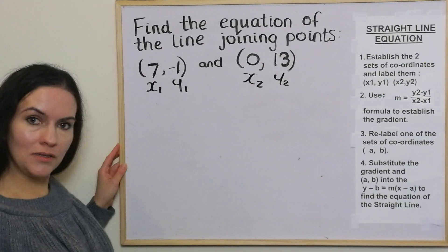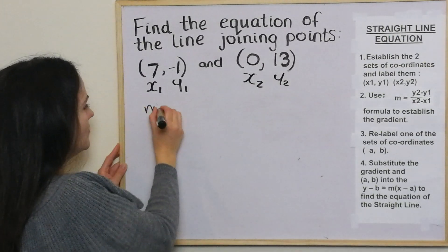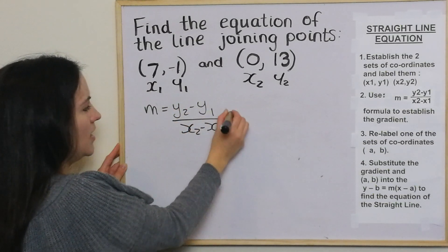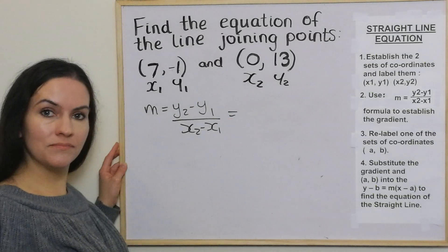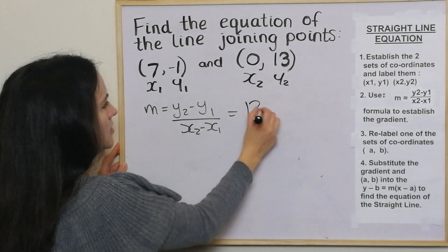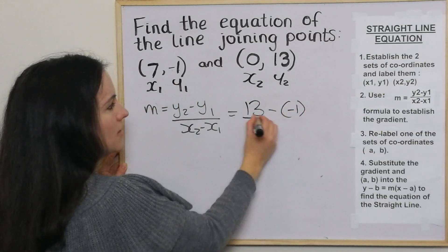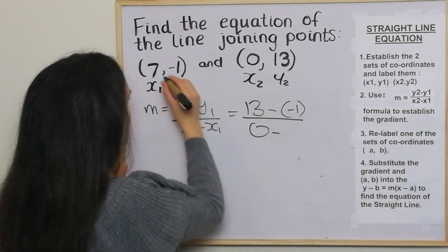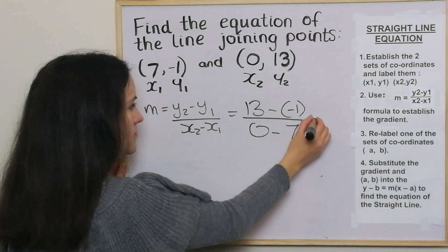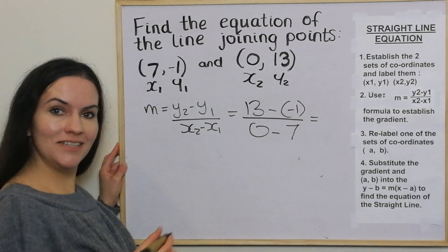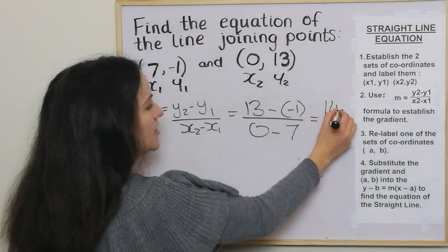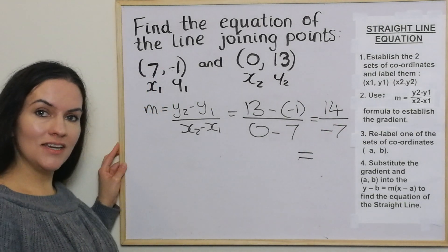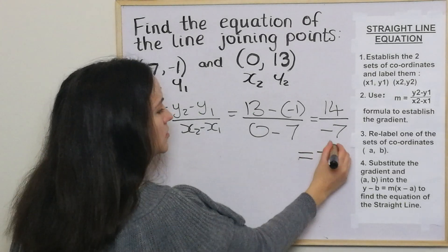Then we use the gradient formula: m equals y2 take away y1 over x2 take away x1. y2 is 13, take away y1 which is negative 1. We put that over x2 which is 0, take away x1 which is 7. The top line becomes 14 and the bottom line becomes negative 7. So 14 divided by negative 7 is negative 2. That's the gradient.